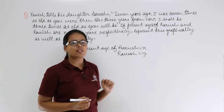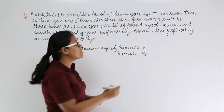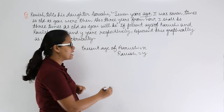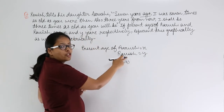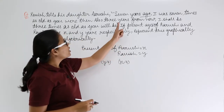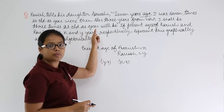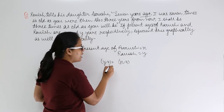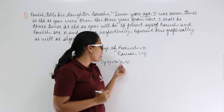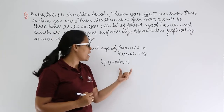Now, information regarding their ages: seven years ago — that means we are talking about the past — the age of Arushi will be x minus seven, and the age of Ravish will be y minus seven. The condition applied is: seven years ago, Ravish was seven times as old as Arushi. So his age was seven times the age of Arushi, giving us age of Ravish = 7(x − 7).